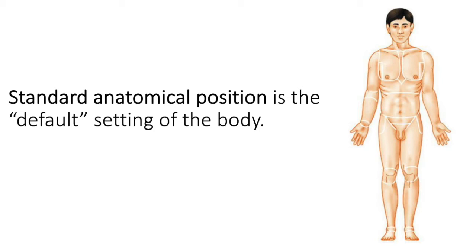No matter how you find the body — if it's lying down, if the forearm is pronated or the feet are inverted or everted — we always have a standard terminology to use, and this is called standard anatomical position. Even if someone is wheelchair bound, you would still write a report about their body using standard anatomical position. It's a standing, erect body: head up, palms facing forward, thumbs facing away from the body, feet about shoulder-width apart pointing forward. It's sort of a default setting that we all use.